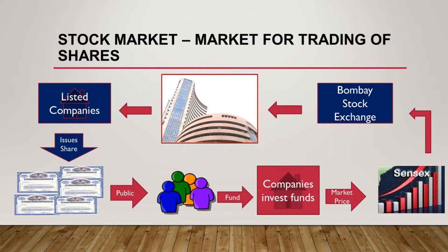Shares are generally issued in denomination. For example, if a company wanted to generate a fund of rupees 50 lakhs from the public and kept the price of each share at rupees 10, the number of shares it would issue would be five lakhs at rupees 10 each. So someone from the public wanting to invest rupees 10,000 would be able to buy one thousand shares at rupees 10 each.